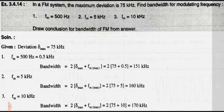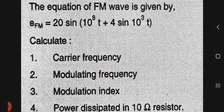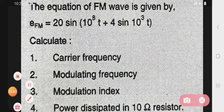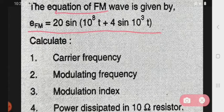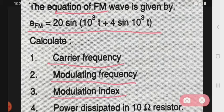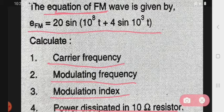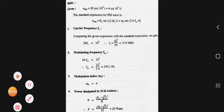Now we see the next important problem. In this problem, the equation of frequency modulation will be given: e_fm = 20 sin(10⁸t + 4 sin(10³t)). From this equation, find the carrier frequency, modulating frequency, modulation index, and power dissipated in a 10-ohm resistor. You have to solve it the same way as amplitude modulation — by comparing with the standard FM equation.